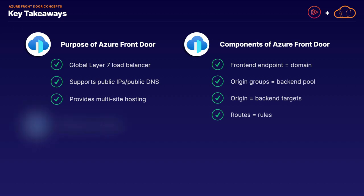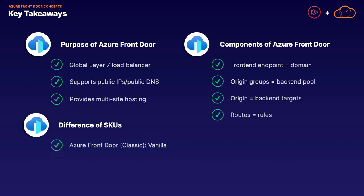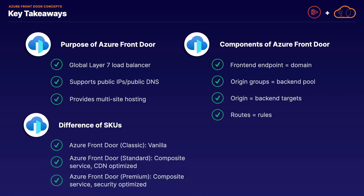The other key takeaway is the difference between SKUs: Azure Front Door Classic is the vanilla bare-bones SKU; Azure Front Door Standard is a CDN-optimized composite service of Azure CDN, Azure Front Door, and Azure WAF; and Azure Front Door Premium V2 is the security-optimized composite service with additional WAF features and Azure Private Link endpoints. That covers all the key takeaways for this lesson. Thanks for joining me — in the next lesson we'll dive deeper on the Azure Front Door components.